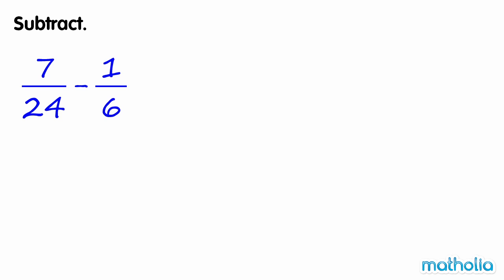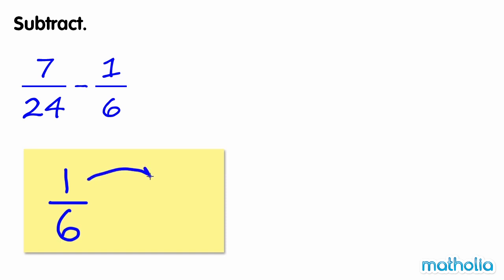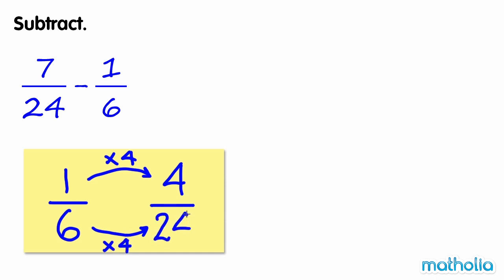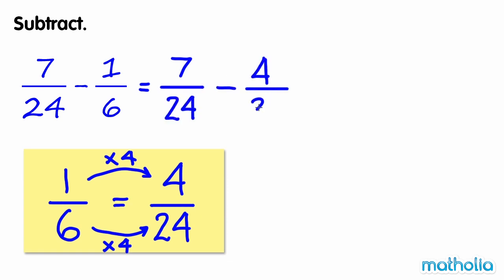Let's find an equivalent fraction of 1 sixth where the denominator is 24. 1 sixth is equal to 4 twenty-fourths. So 7 twenty-fourths minus 1 sixth is equal to 7 twenty-fourths minus 4 twenty-fourths.